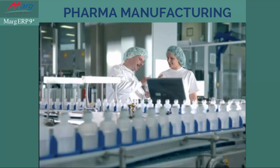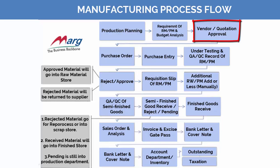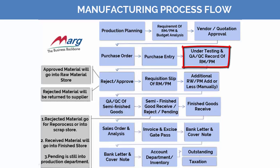Now let's understand through a flowchart how MARK manufacturing software is used and implemented. This is the manufacturing process flow where first we have production planning - we see requirements of raw materials, packing materials, and budget analysis. After that we require a quotation through a vendor, that quotation goes through approval, then we generate a purchase order, goods are received, and we do the purchase entry.